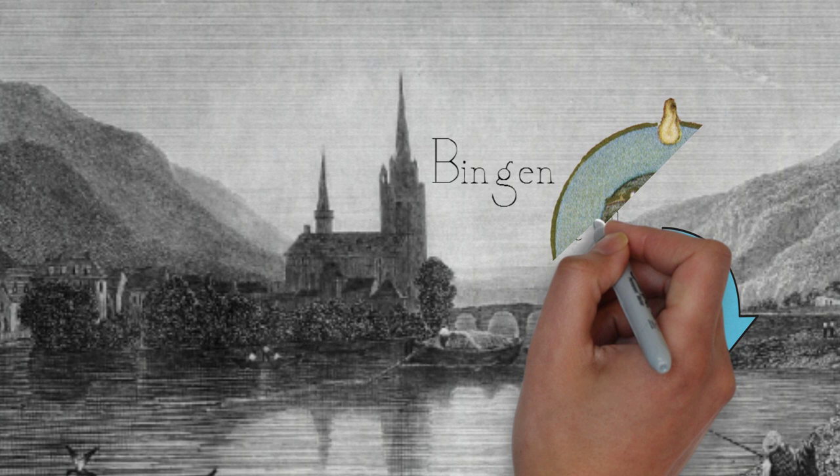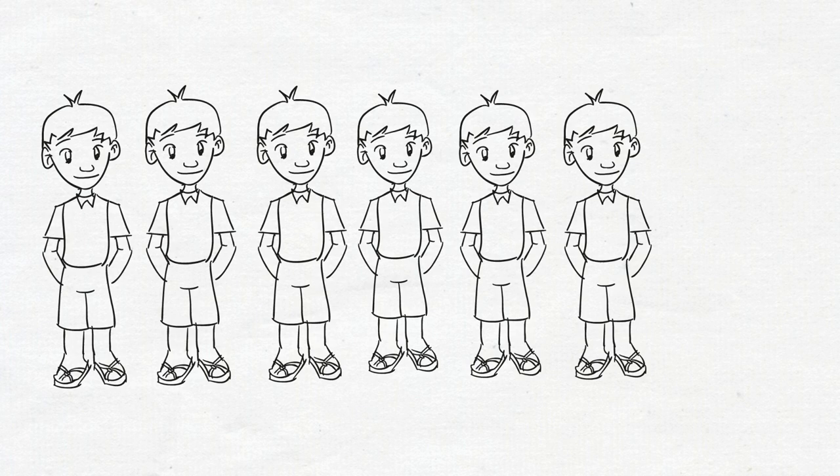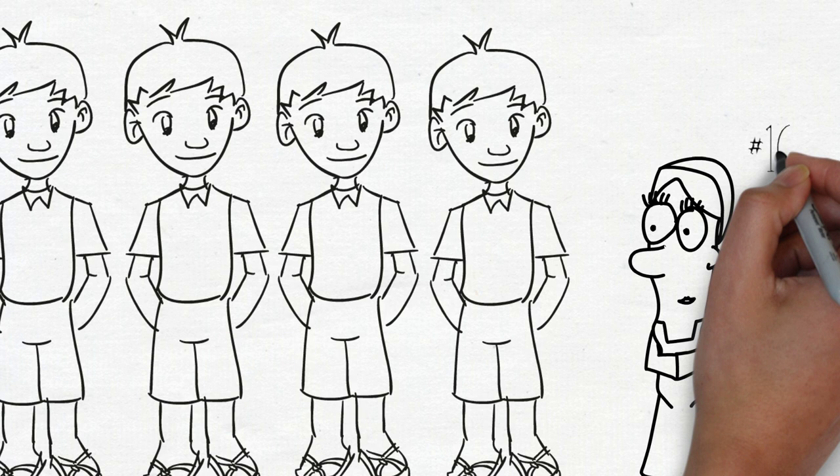Because she lived in Bingen, she was known as Hildegard of Bingen. Hildegard came from a rich family and was one of ten children. Her parents gave her to the church to become a nun, which was a popular thing to do with extra children in those days, especially if you had ten.